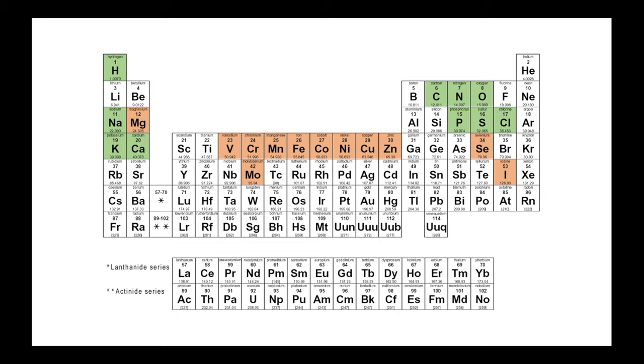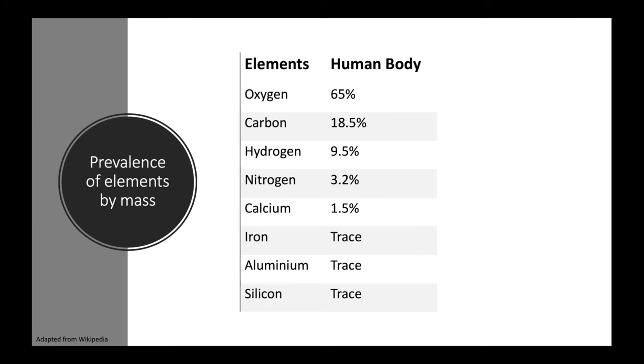By far the most common elements present in living organisms are oxygen, carbon, hydrogen and nitrogen. And these make up more than 95% of the mass of the human body. The reason oxygen and hydrogen are so abundant is the essential role that water, made up of one molecule of oxygen and two molecules of hydrogen, plays in allowing life to exist.